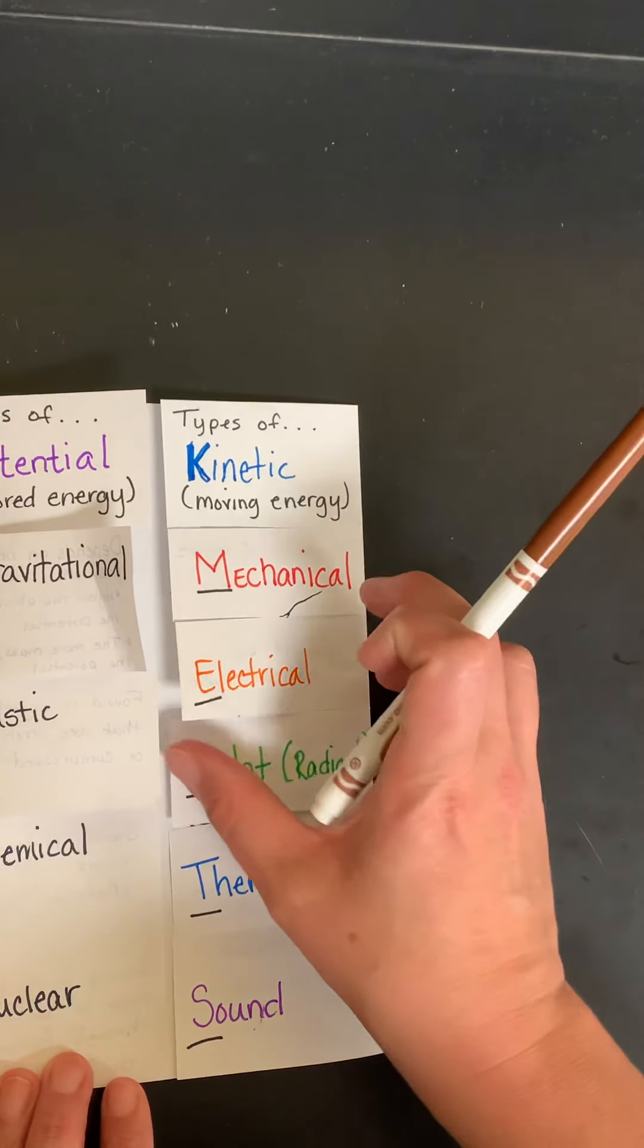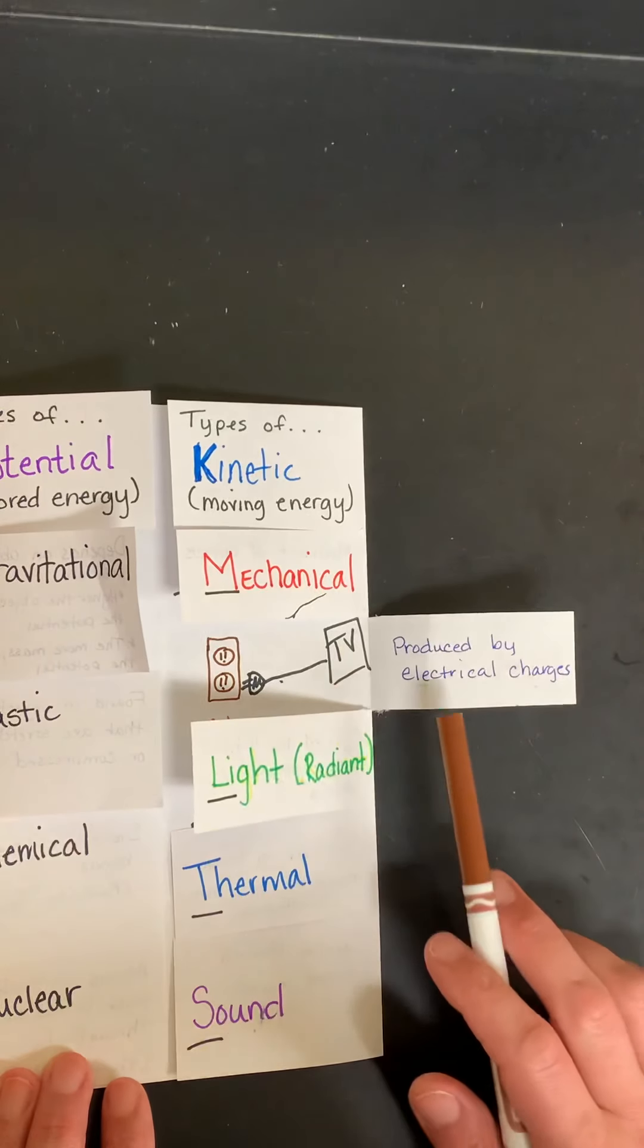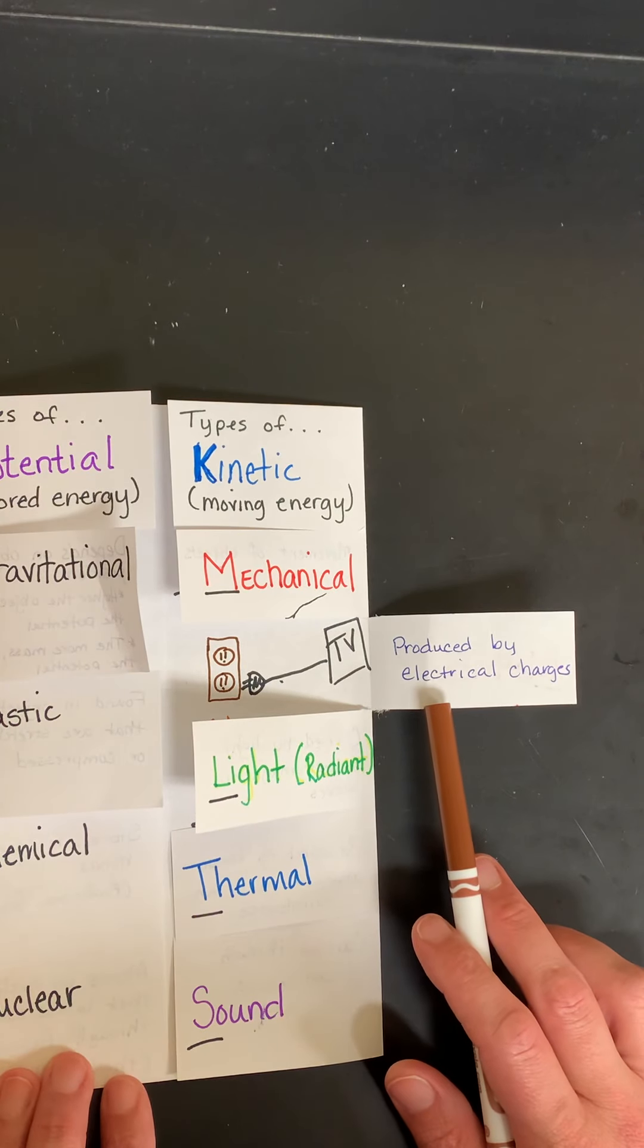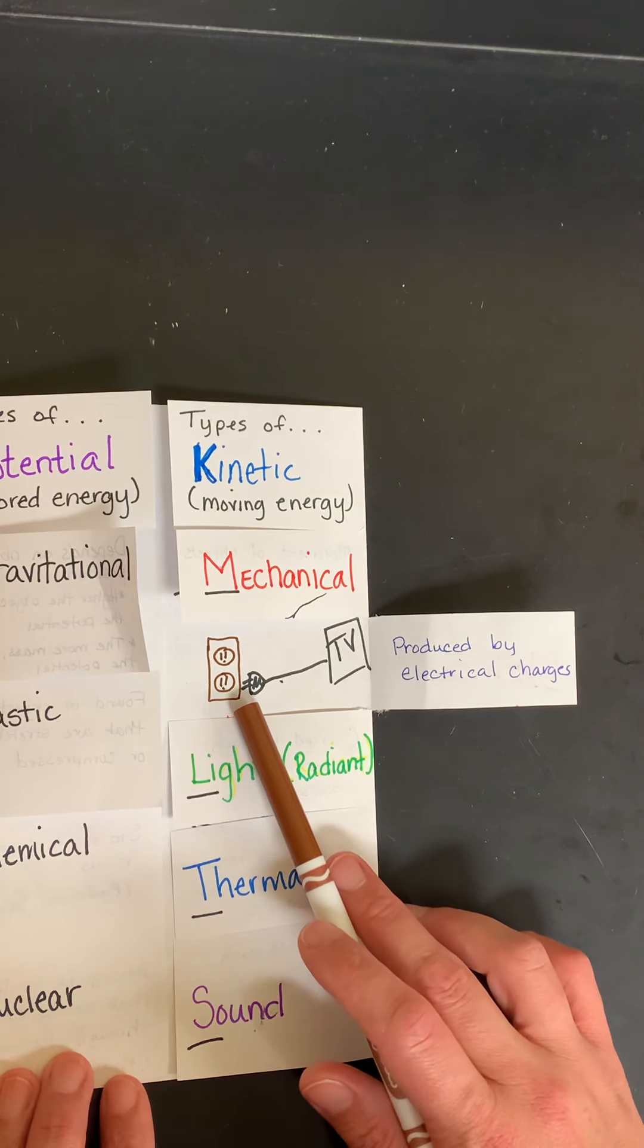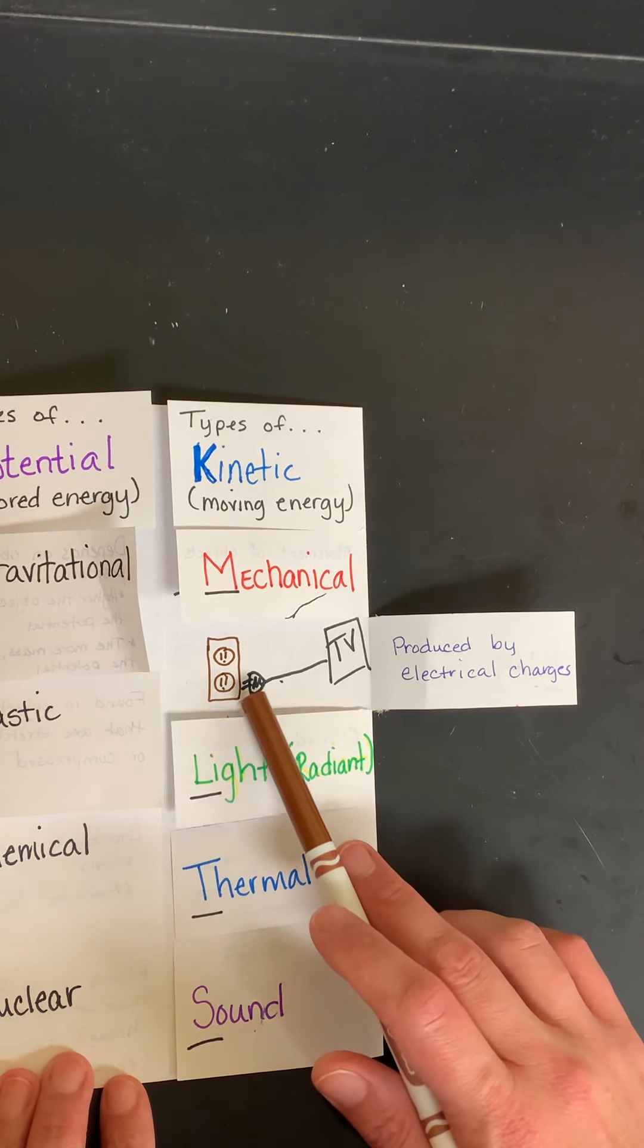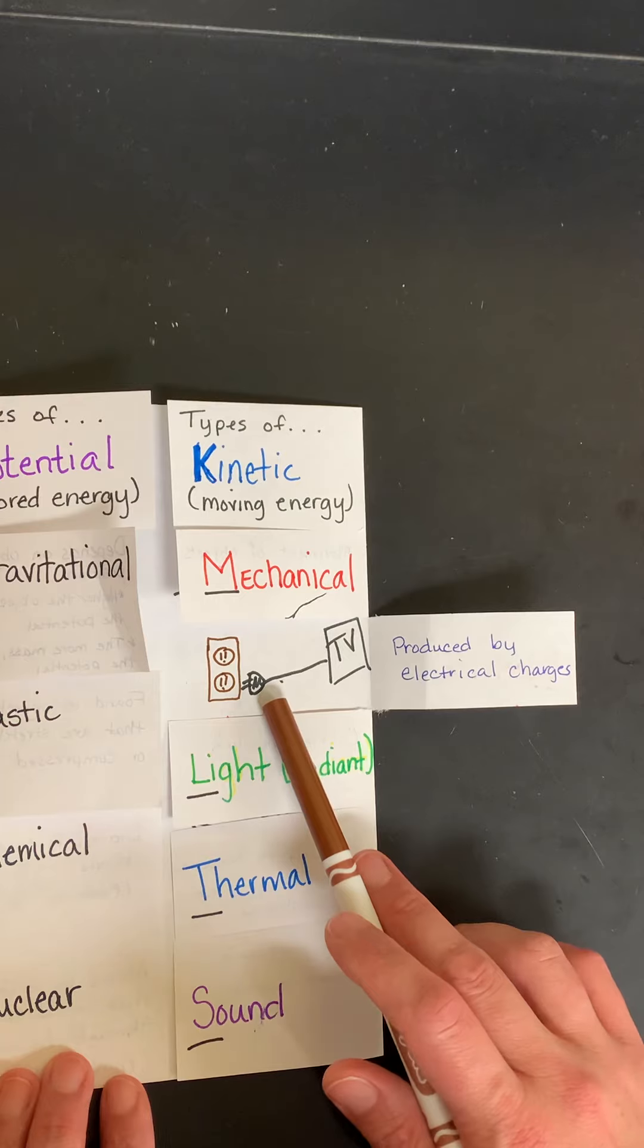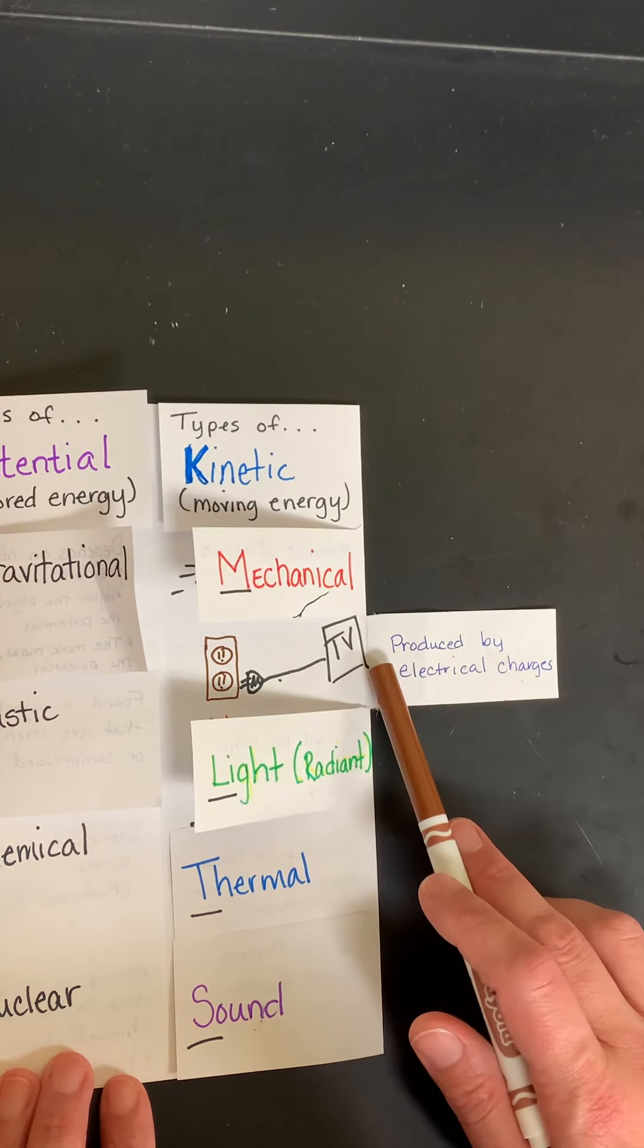And then we have electrical. Electrical energy is produced by electrical charges. We typically see this as it travels along the wire, so it's moving into the outlet, which is what our devices are plugged into, and it powers our TV.